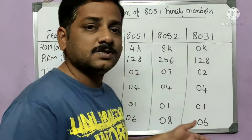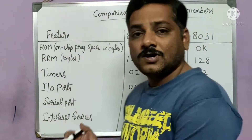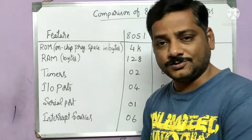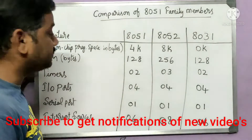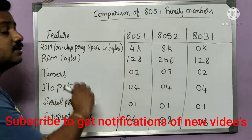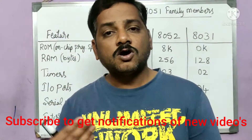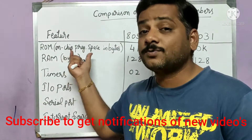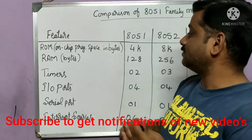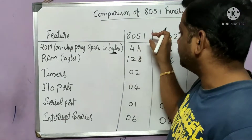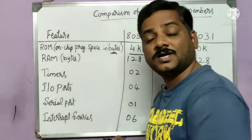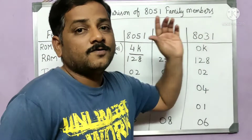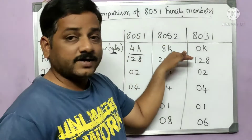When selecting a microcontroller, certain features have to be considered. First, ROM — that is Read Only Memory — is on-chip memory used to write a program. It is 8-bit, so it is measured in bytes. For the 8051, ROM is 4K, meaning 4 × 1024 bytes of memory reserved for writing a program. For the 8052, it is double — 8K.